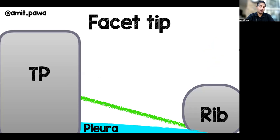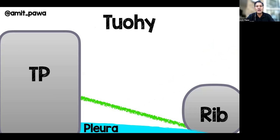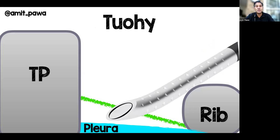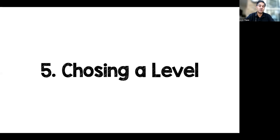What about needle choice? When I first started I used a facet tip needle, but the issue is you've got the sharp point of the needle aiming for that narrow space where the pleura is. I now prefer to use a Tuohy needle because the Huber tip is pointing away from the pleura — it's much nicer to approach the paravertebral space. I tend to use an 18-gauge Tuohy, although smaller Tuohy needles are available and I would recommend those.